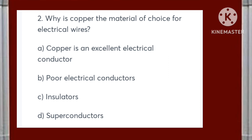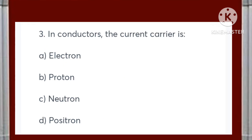In conductors, the current carrier is: electron, proton, neutron, or positron? Answer is A — electron.